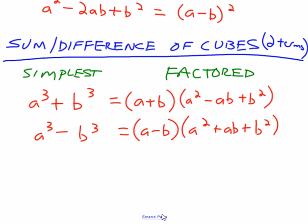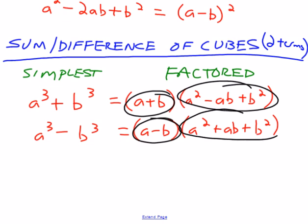If, in simplest form, you have a binomial, two terms, and you're either adding or subtracting things, it doesn't matter which one, but numbers that are perfect cubes, numbers that you can take a cube root of, those numbers can be instantly factored by formula. The formula is going to be one linear binomial and one quadratic trinomial.